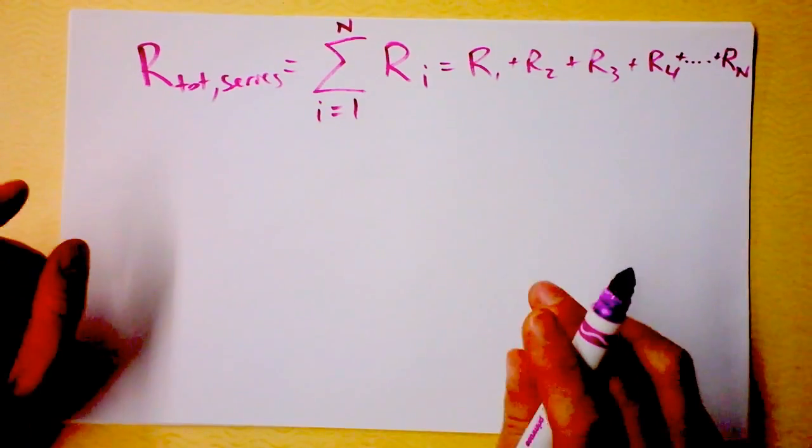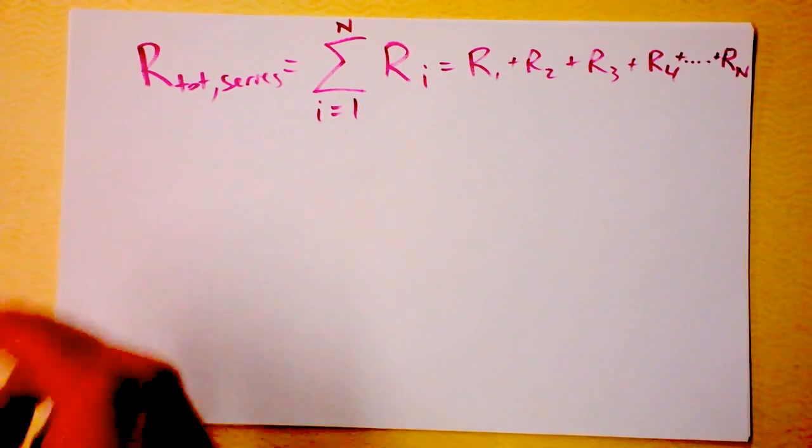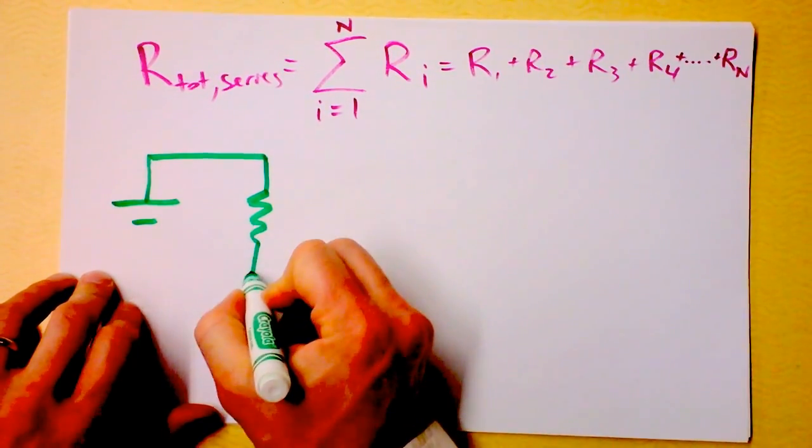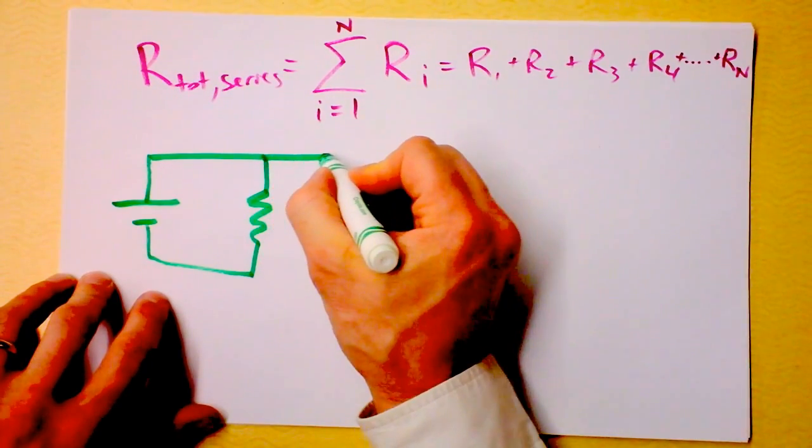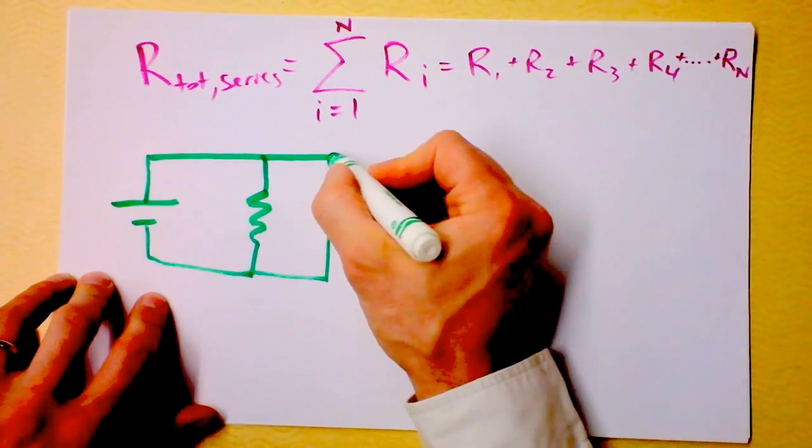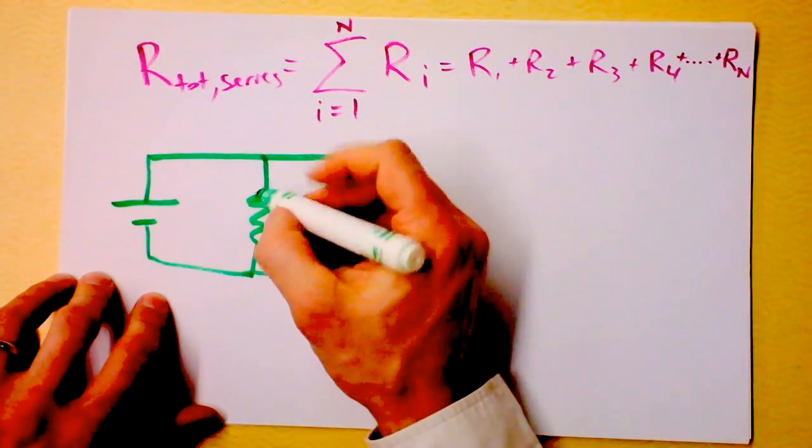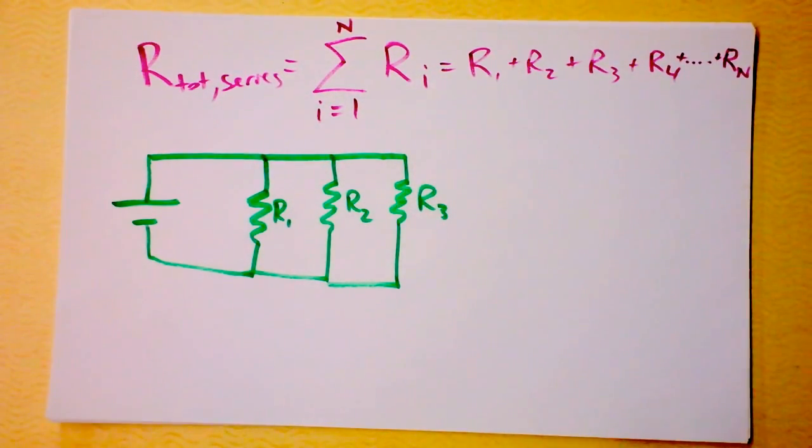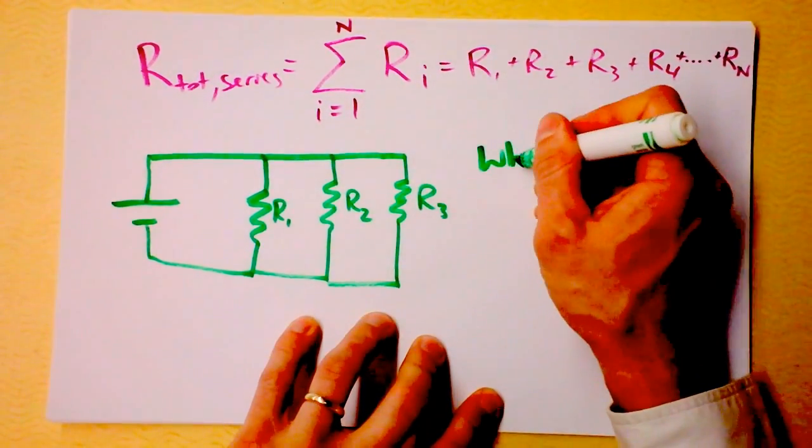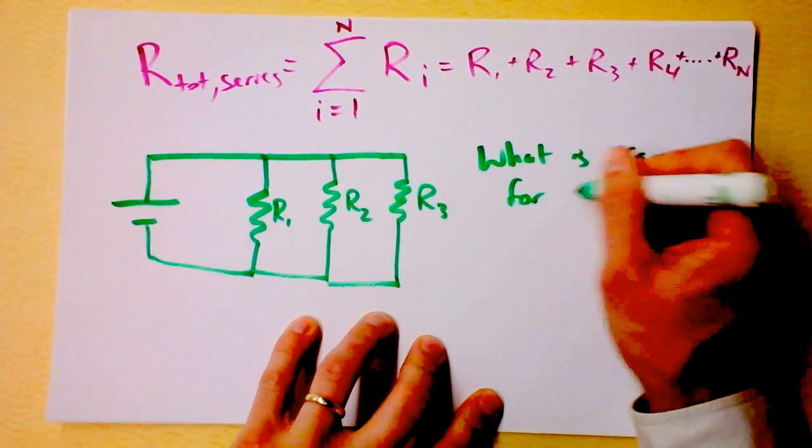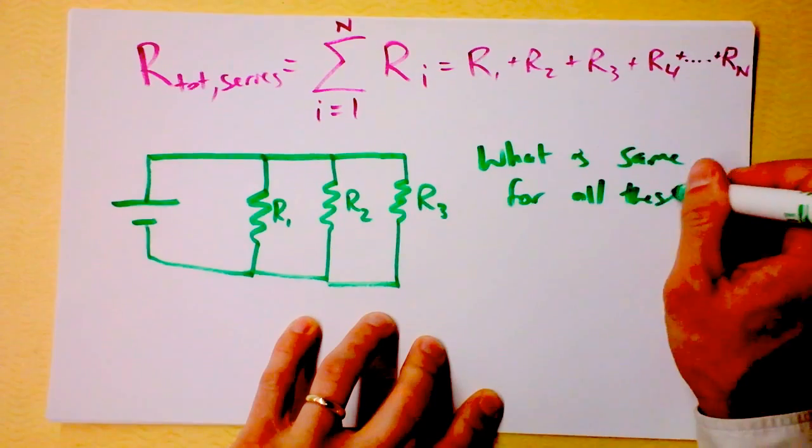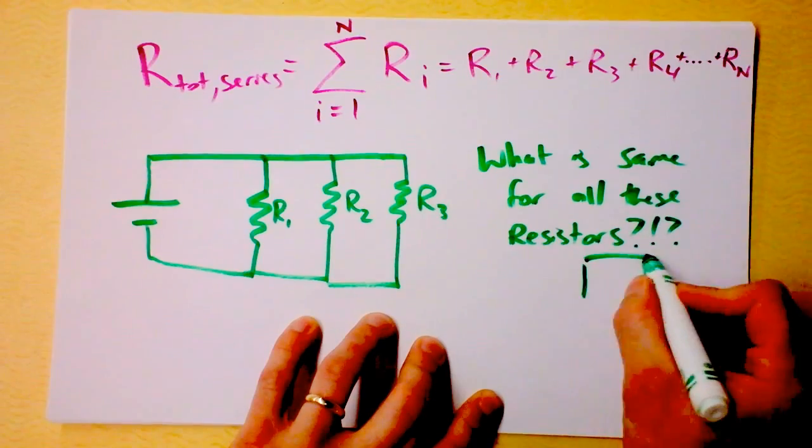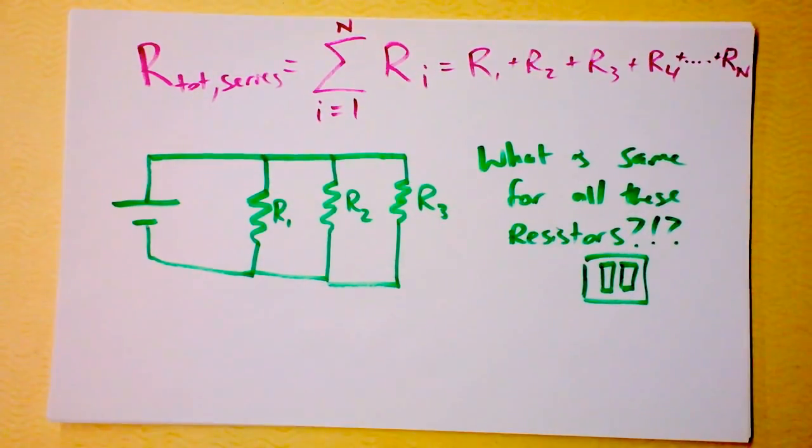Now, what if you've got a parallel circuit? This is a little bit different game. Now I've got a battery. And I've got a resistor right here. But a parallel means there's another option for the current. So the current can also go this direction. And here's another parallel. Now I've got three resistors in parallel. And I've got R1 and R2 and R3. Here comes a challenge for you. What is the same for all these resistors? Pause. Figure it out. You know I'm not playing.